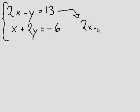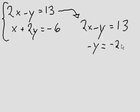2x minus y is equal to 13. So I'm going to subtract 2x from both sides, piece of cake, so I can take it to the right side of the equation.